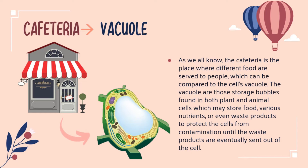Are you hungry or thirsty? No need to worry. In our park, we have our very own cafeteria which can serve you good food and make sure that you will not be hungry while going around the park. A vacuole in a cell is like the cafeteria in our park. Except, instead of serving food to people, it stores food and nutrients which can be consumed by a cell. A vacuole also stores waste products which will later be sent out of the cell.